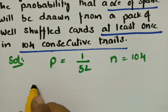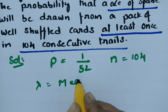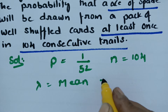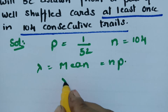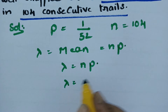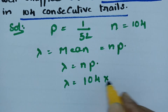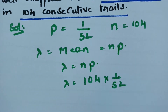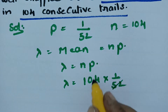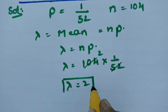We know that the mean lambda value is equal to n into p. So the formula for lambda is equal to n into p. Lambda is equal to n, that is 104, into p, that is 1/52. Cancelling gives us 2, so the lambda mean value is equal to 2.